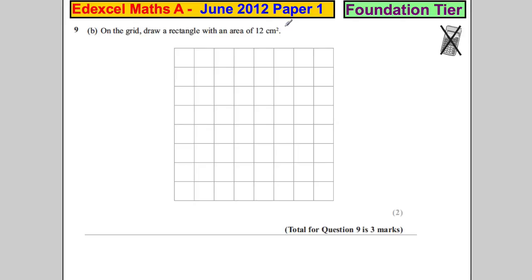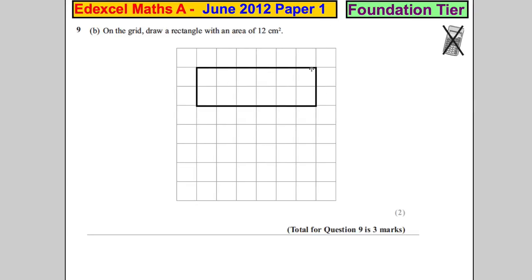On the grid, draw a rectangle with area of 12 centimeters squared. So we want 12 centimeters. Each one of these is supposed to be a centimeter squared. So we've got one there, two, three, four, five, six. And we can double that. So that would be good enough for an answer. That's certainly 12 centimeters squared.